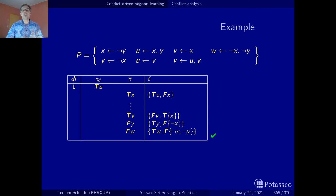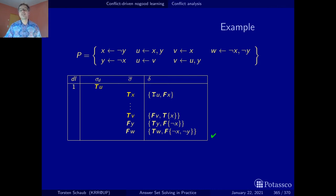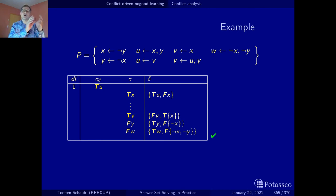Rather, we produced a conflict no-good that will resume propagation. And indeed, we deduced that x must be true, while previously it had the truth value false. It's really this no-good that we add that allows us to resume no-good propagation at a level where we could not apply it anymore — catapulting us into another area of the search space.